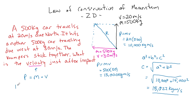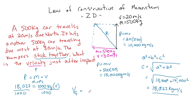The momentum of the whole system equals the total mass times the resultant velocity. We have 18,027 equal to M1 plus M2, which is 1,000 kilograms total — because the cars stick together forming one mass. Dividing both sides by 1,000, the final velocity just after impact is 18 meters per second. That's how we solve for two carts colliding at a 90 degree angle: find the resultant momentum and plug it in to solve for the unknown.